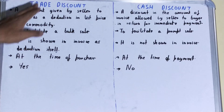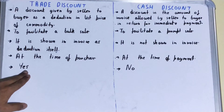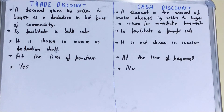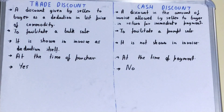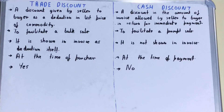Regarding whether it is allowed to all customers: for trade discount, yes, it is allowed for all customers. But for cash discount, no — it is only for a specific customer who is particularly paying the payment at that time.